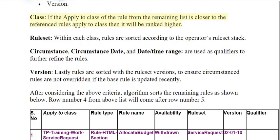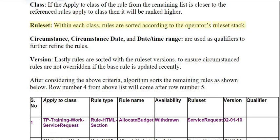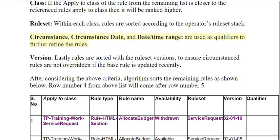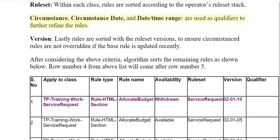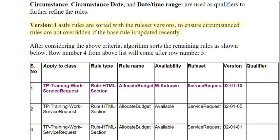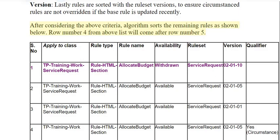If the apply-to class of the rule from the remaining list is closer to the referenced rule's apply-to class, it will be ranked higher. Within each class, rules are sorted according to the operator's rule set stack. Circumstance, circumstance date, and date-time range are used as qualifiers to further refine the rules. Lastly, rules are sorted by rule set versions to ensure circumstanced rules are not overridden if the base rule is updated recently. After considering the above criteria, the algorithm sorts the remaining rules accordingly, with row number 4 coming after row number 5.